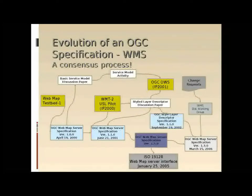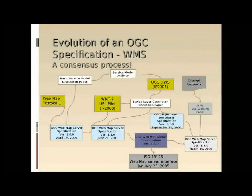Now that we have a good idea about why we need standards and, in particular, OGC standards, let's take a look at how OGC standards evolved by looking at how the first OGC web services standard was developed and how it evolved. In this case we are looking at the Web Map Service or WMS standard. I'm not going to get into all the details of the slide, but I want to point out a few salient points. The yellow boxes represent testbeds.